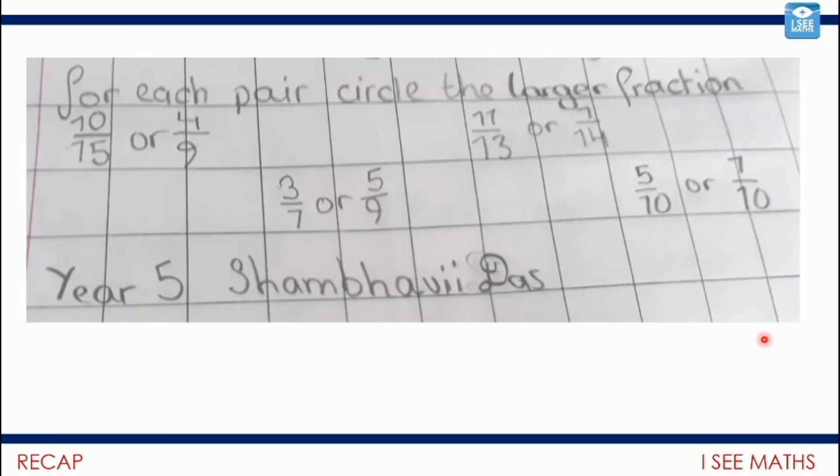And we had a look at this other idea of benchmark measures, maybe thinking about half. Which is larger, 4 10ths or 8 15ths? I don't really need a common denominator there. I can just see that 4 10ths is less than half, 8 15ths is more than half, because 8 is more than half of 15. Now, then I asked for some of your questions. It's been fabulous receiving them. We'll come on to some others later in the week as well.